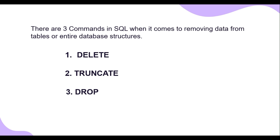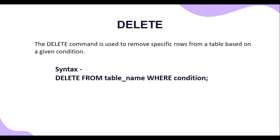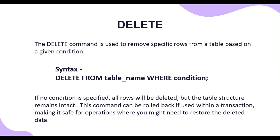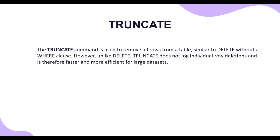Let's begin with the DELETE command. The DELETE command is used to remove specific rows from a table based on a given condition. The syntax looks like: DELETE FROM table_name followed by the WHERE condition. If no condition is specified, all rows will be deleted but the table structure remains intact. This command can be rolled back if used within a transaction, making it safe for operations where you might need to restore the deleted data.